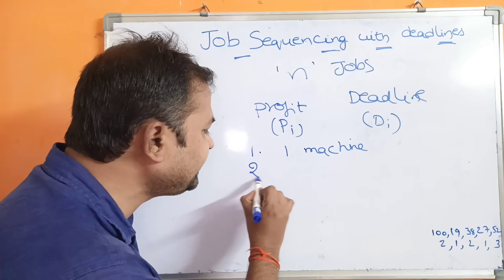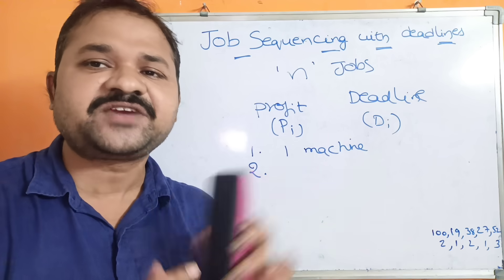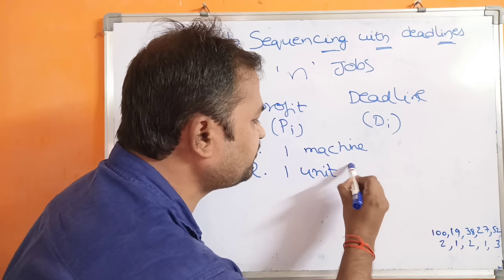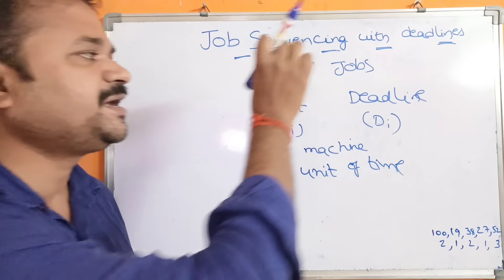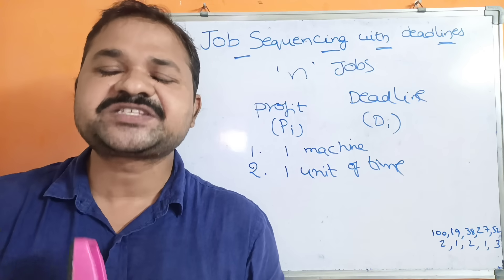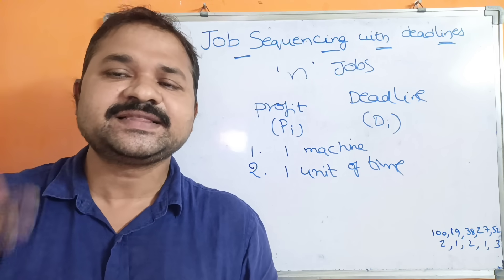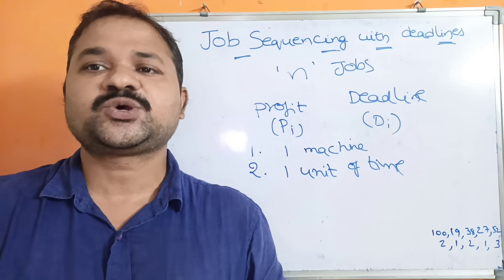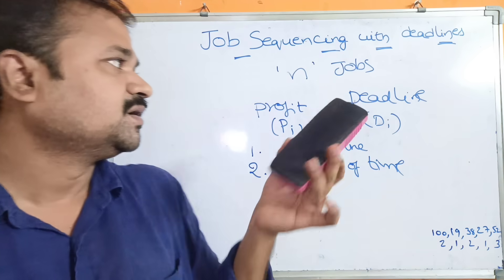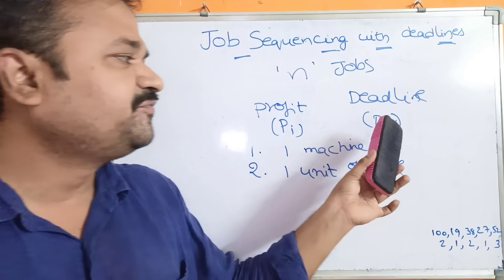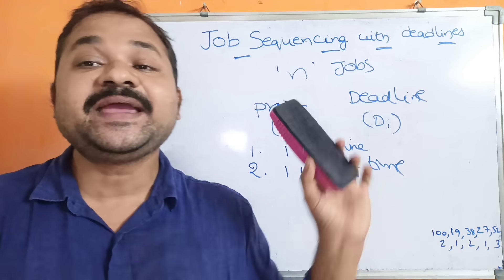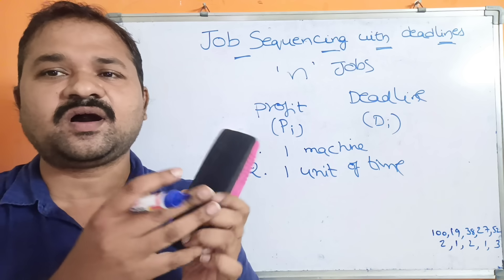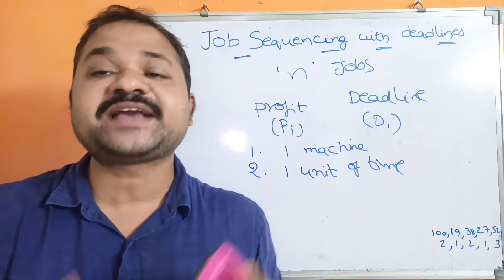The second constraint is that the machine requires one unit of time to complete the execution of each job. So to complete the first job, the machine requires one unit of time; for the second job, one unit of time, and so on. Our objective is to complete all these jobs — or some subset of the jobs — by their deadlines with the maximum profit.